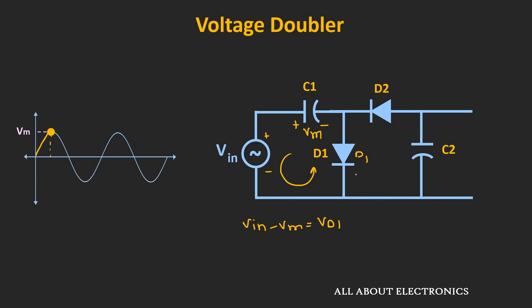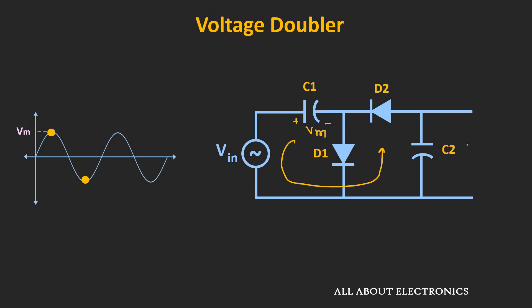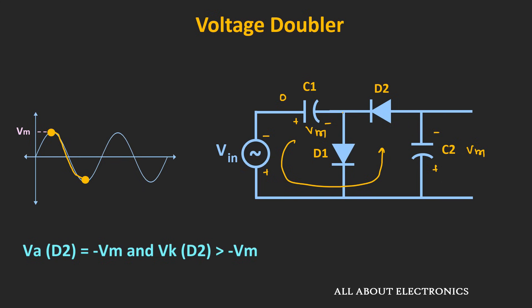After this point, the voltage at the node is Vin − Vm, and since Vin is less than Vm, the cathode of D2 becomes more negative than the anode, so diode D2 starts conducting. Through this path, capacitor C2 also starts charging. The charge across capacitor C1 transfers to capacitor C2. At a certain point, the charge across C1 becomes zero and C2 charges up to Vm. As Vin rises again, D2 turns OFF and the charge on C2 remains.